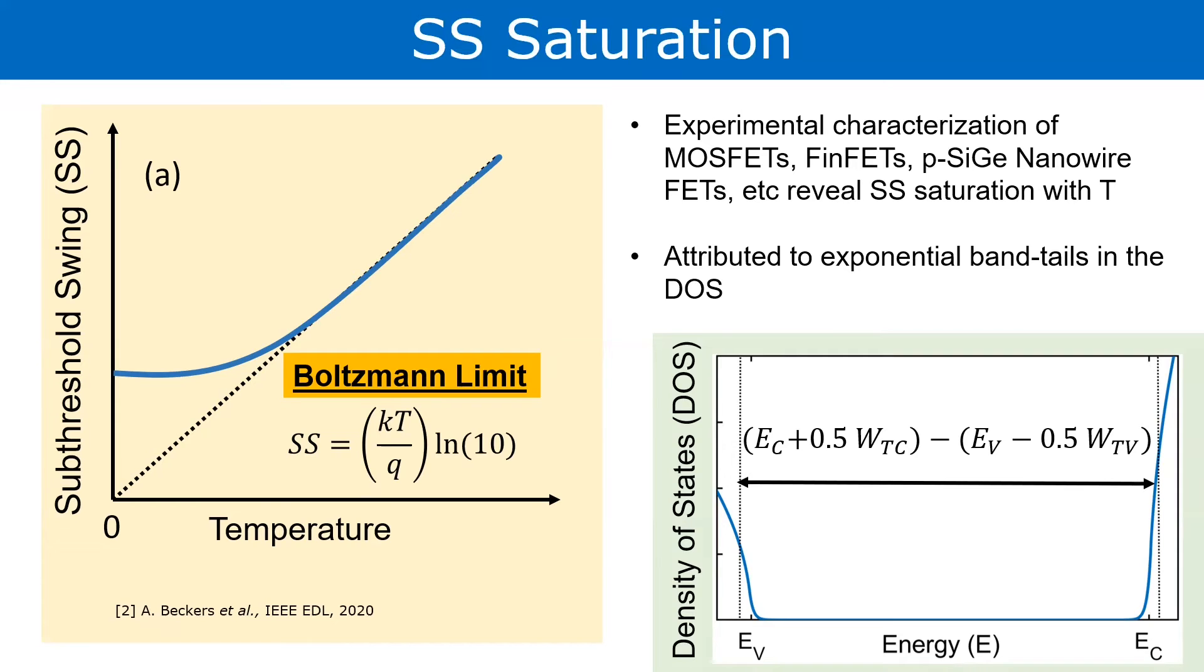So, we expected something like square root EV minus E and square root E minus EC type of dependence, which would become 0 at E equal to EV and E equal to EC. However, it is now believed that it doesn't abruptly terminate at the valence or conduction band edges, but actually exponentially decays down within the band gap.